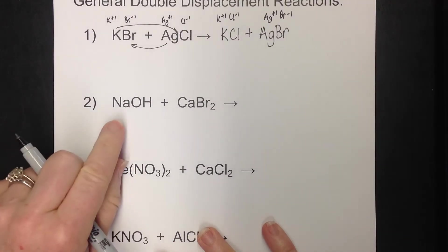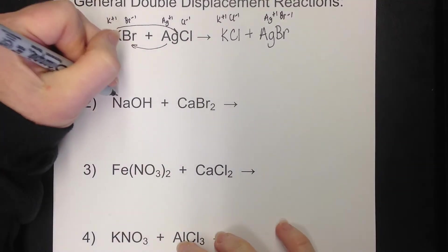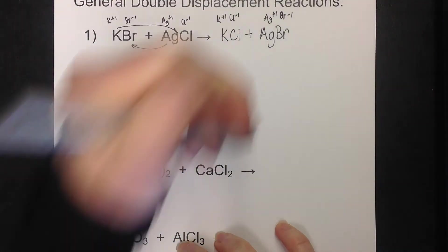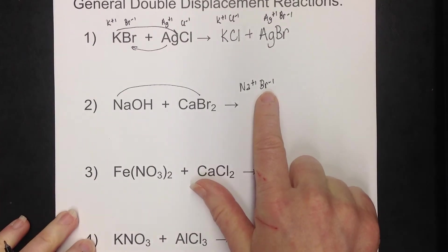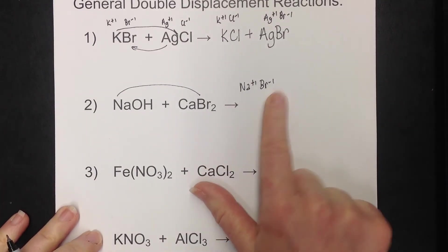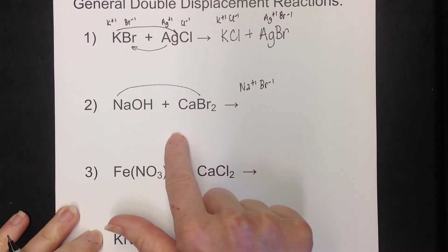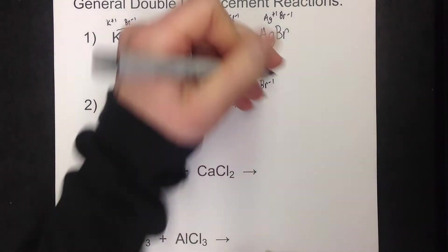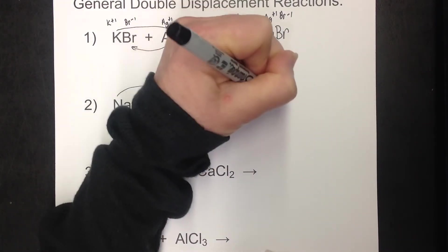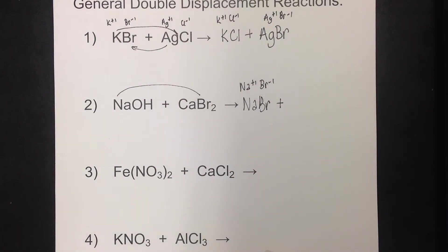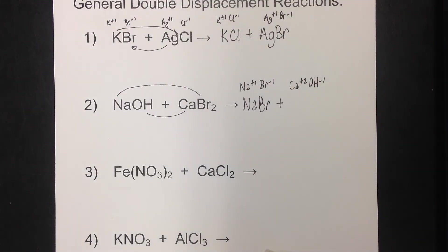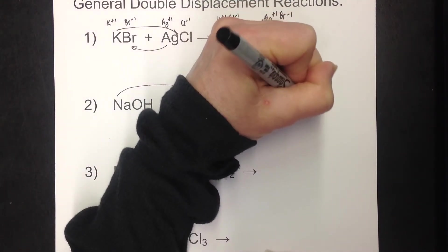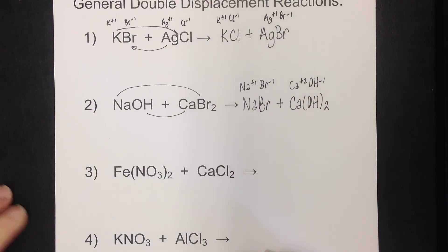Number two: sodium hydroxide with calcium bromide. We put the outer two together — sodium (Na⁺¹) with bromide (Br⁻¹) — the ones cancel, giving NaBr. Then we put calcium with hydroxide: calcium is Ca²⁺, hydroxide is OH⁻¹. When they crisscross, you get Ca(OH)₂. Remember, always go back to the original ions — don't carry over the subscript from the original compound when crisscrossing with the new partner.